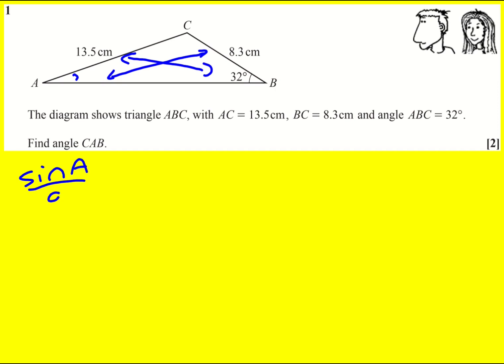Sine A divided by A, where 8.3 is A, equals sine B over B, where 13.5 is B.